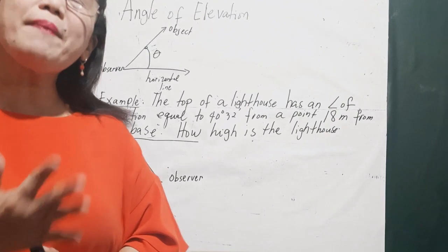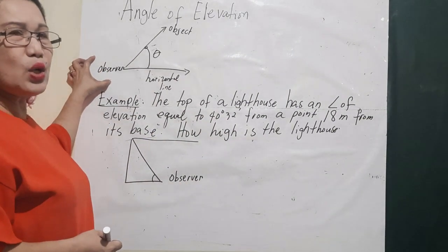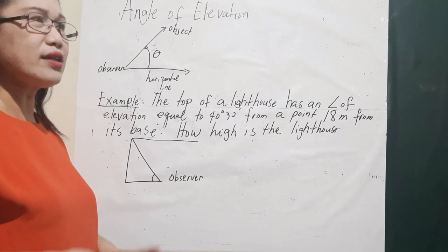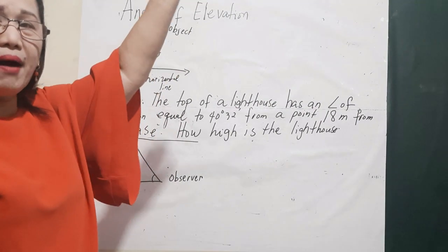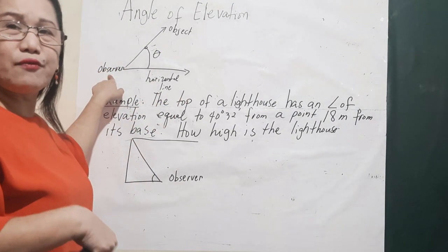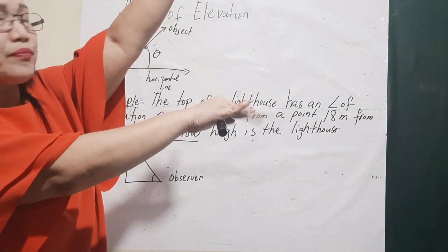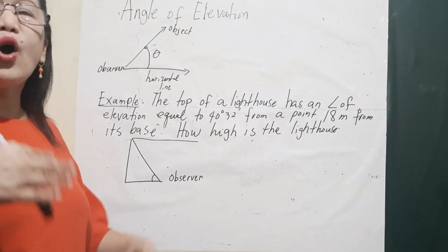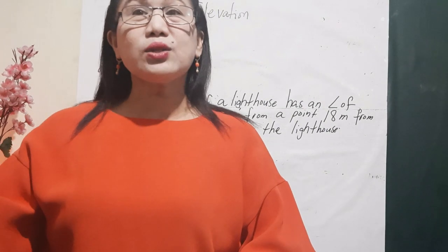When we talk about angle of elevation, I have here on the board the observer — you are the observer. There is a horizontal line, which is level when you are standing. If you want to see an object above you, the angle formed between the horizontal line and your line of sight going upward is what we call the angle of elevation. This involves trigonometry — the SOHCAHTOA and the right triangle.